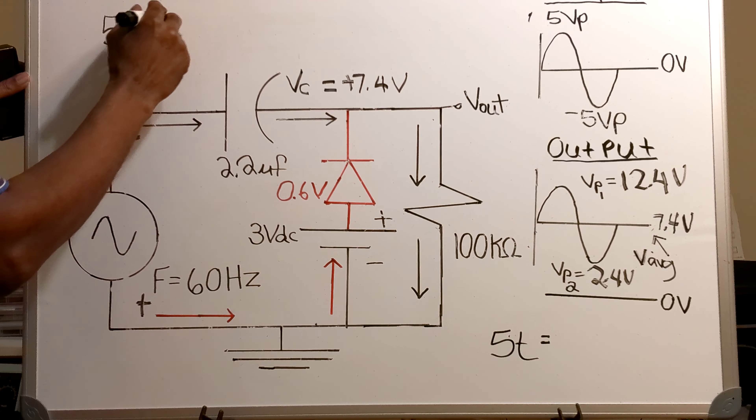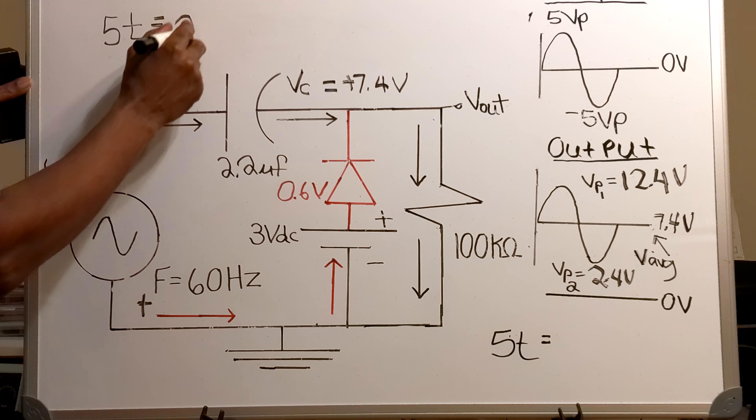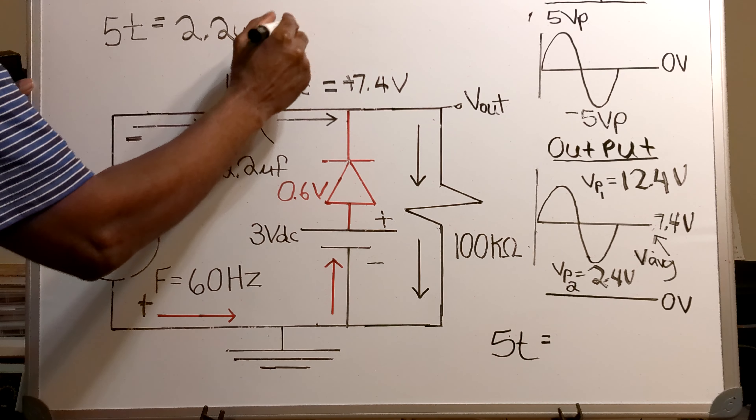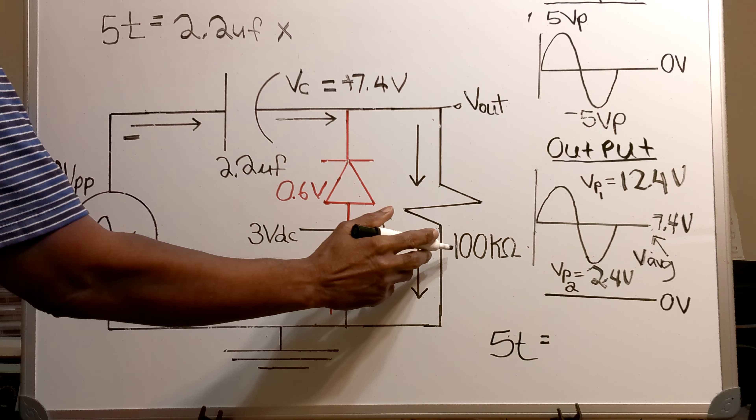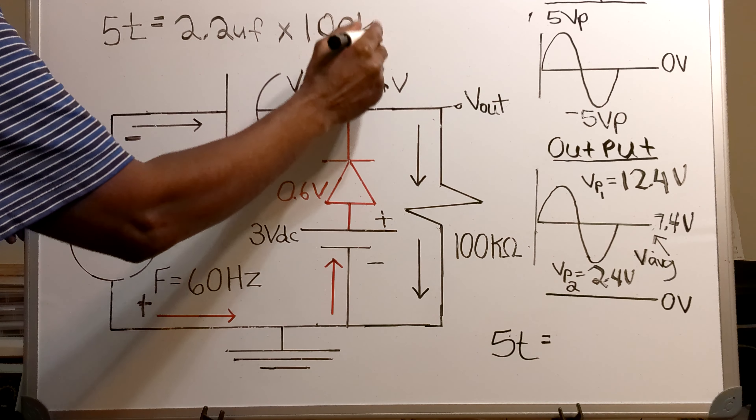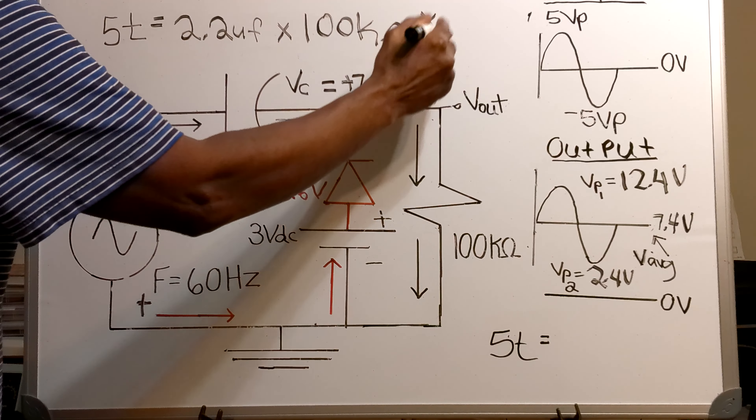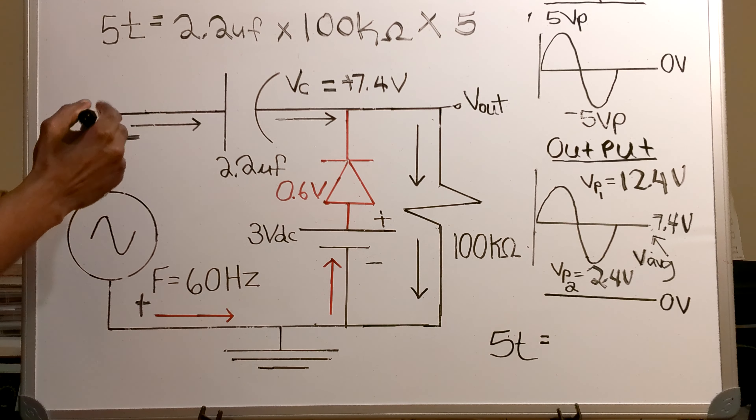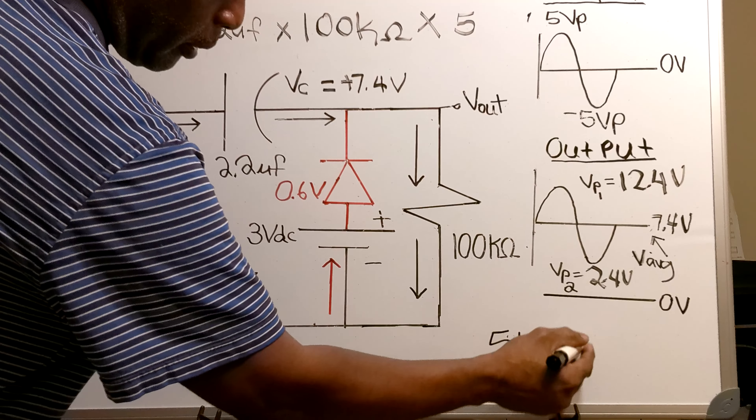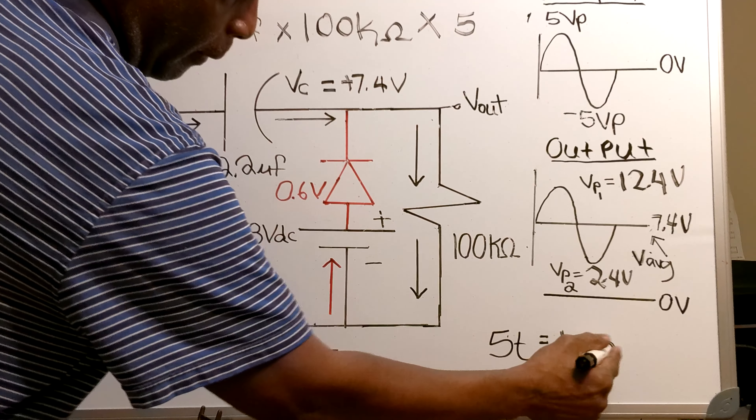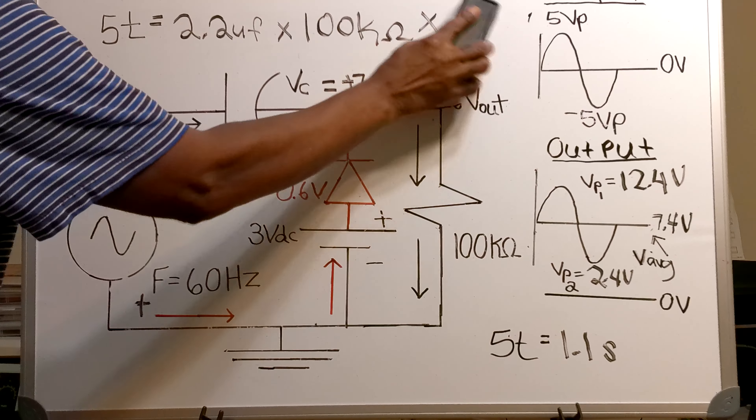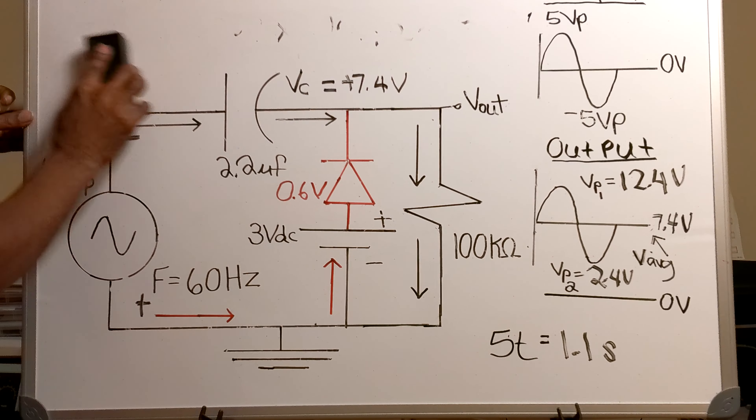Now the next thing that I'll find is the value of the 5 time constant. 5T equals 2.2 microfarads times the 100 kohm resistor times 5. And that will give you a 5T of 1.1 seconds.